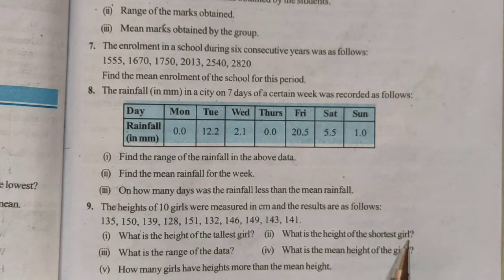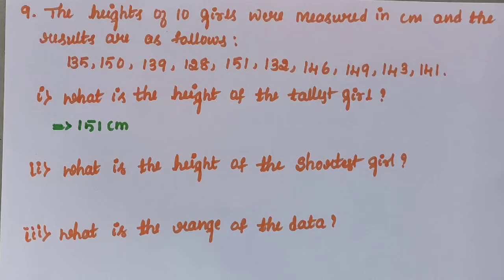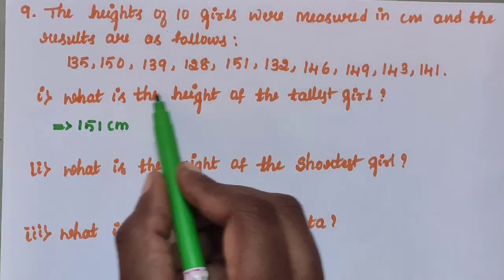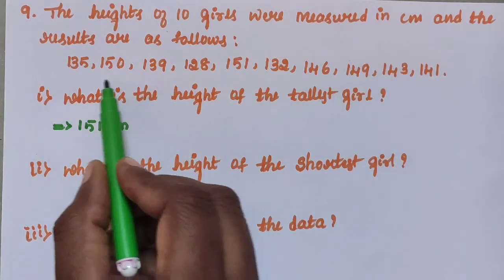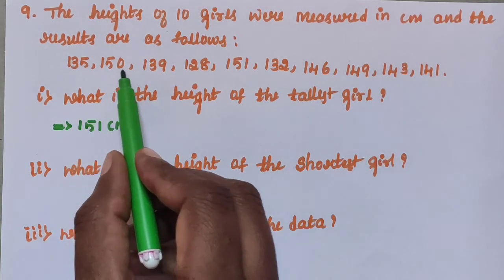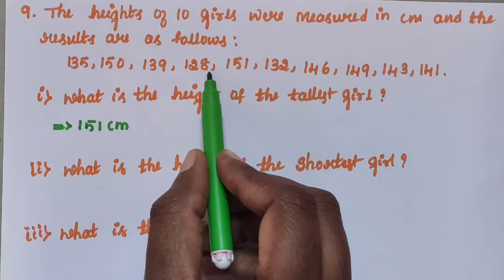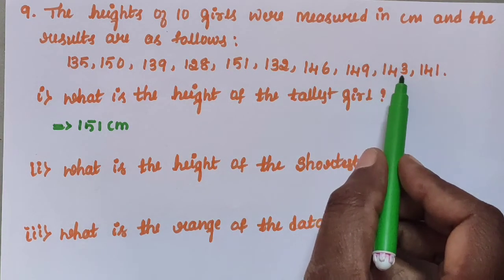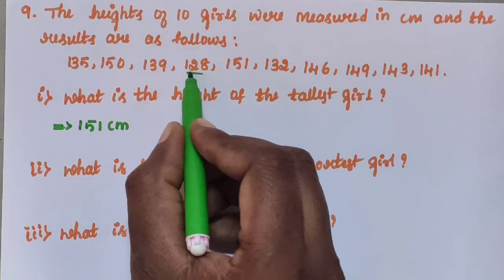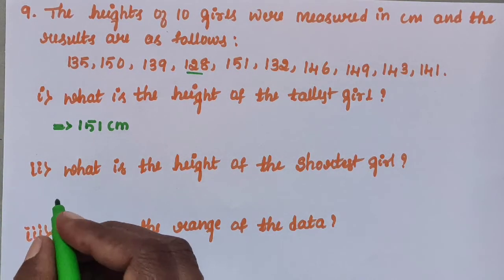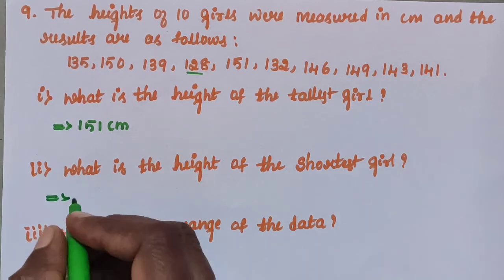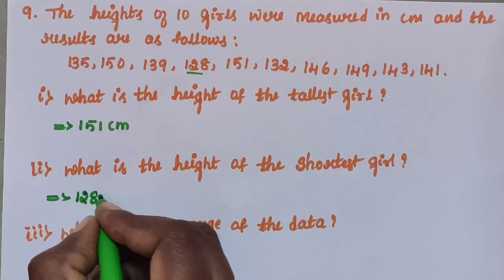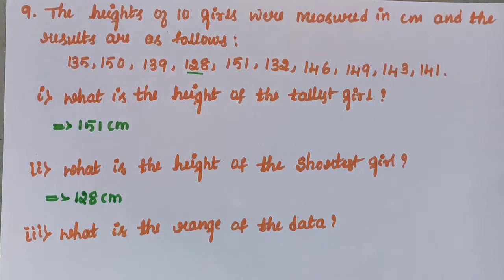Sub question 2: What is the height of the shortest girl? Looking at the data: 135, 150, 139, 128, 151, 132, 146, 149, 143, 141. Then 128 is the shortest girl's height. The answer is 128 cm.